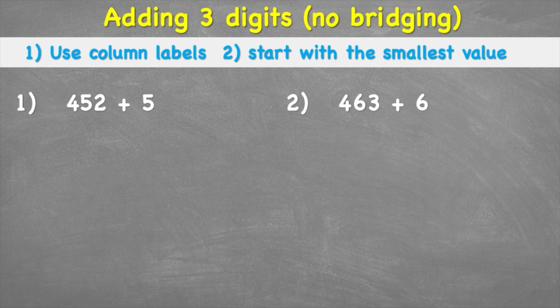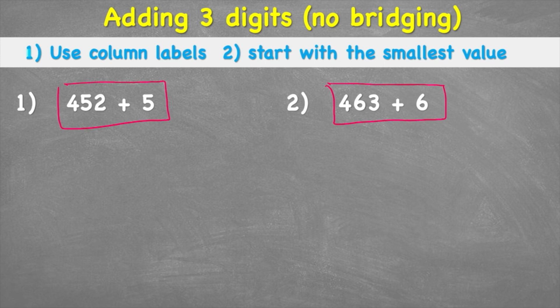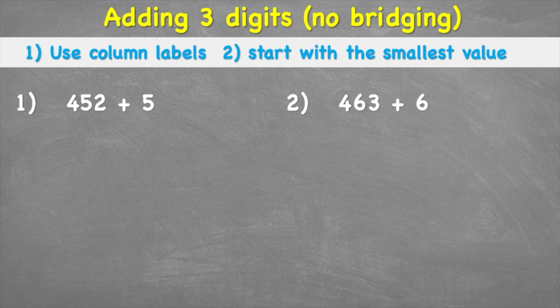Today we're going to look at these two questions: 452 add 5, and 463 add 6. We're going to follow these steps. Step one says we're going to use column labels — we'll see what that means in a minute — and step two says start with our smallest value. So let's begin.